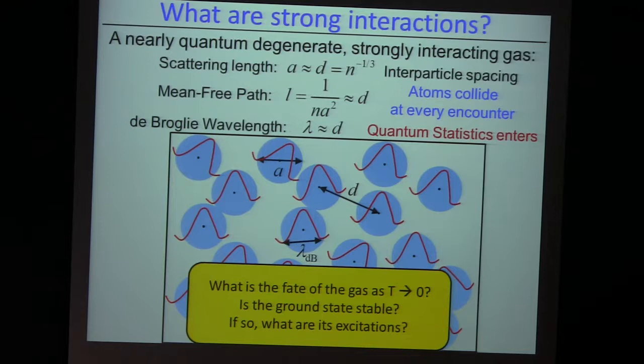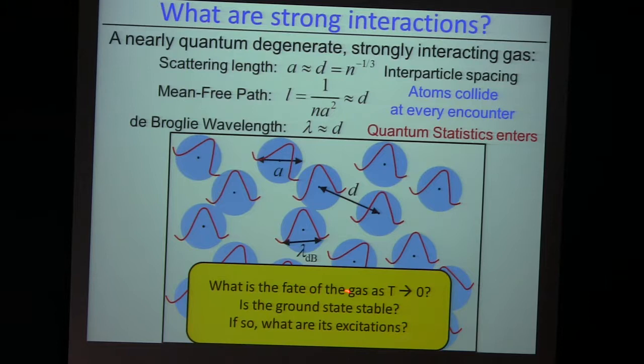This cartoon picture should not necessarily stick too strongly in your minds. It turns out when you go to very low temperatures, there's another length scale that comes in — the de Broglie wavelength. And of course, quantum statistics starts playing a role once the de Broglie wavelength becomes on the order of the interparticle spacing.